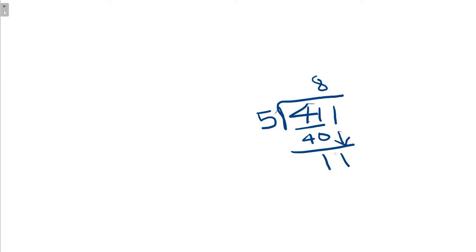5 goes into 11 2 times, because remember, 5 times 2 is 10. So 2 times 5 is 10. We subtract. Lo and behold, we have 1 left over. So we have 82 remainder 1, just like our last problem. But we kind of knew this. We knew 82 times 5 was 410. So if we increased 410 by 1, we'd have 82 remainder 1.